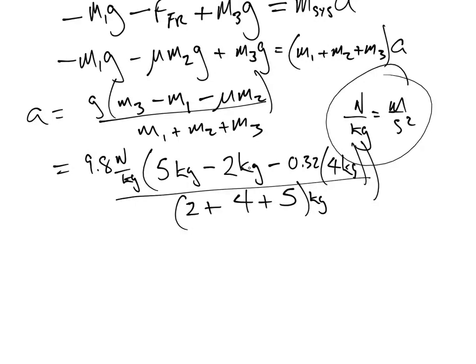You notice I can interchange newtons per kilogram and meters per second squared. I do this on purpose, they're both the same units, they're not different. Mass number three was five minus mass number one which was two minus 0.32 times mass number two which was four, all over M1, 2 plus 4 plus 5 kilograms. 0.32 enter, four times, change sign, 2 minus, 5 plus, 9.8 times, 11 divided by, all that adds up to 11.